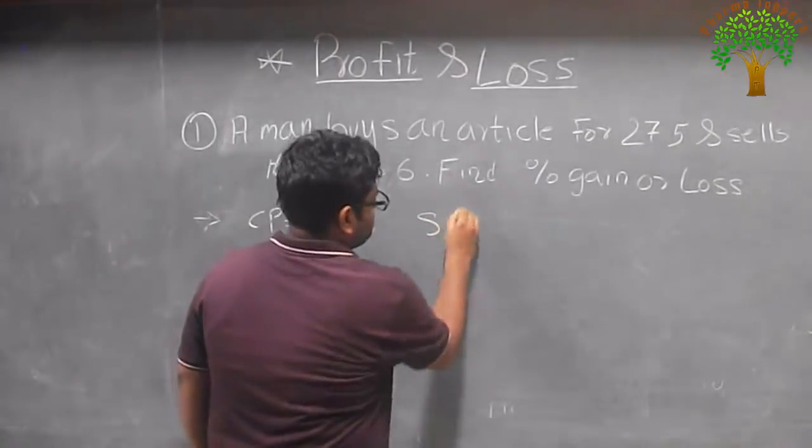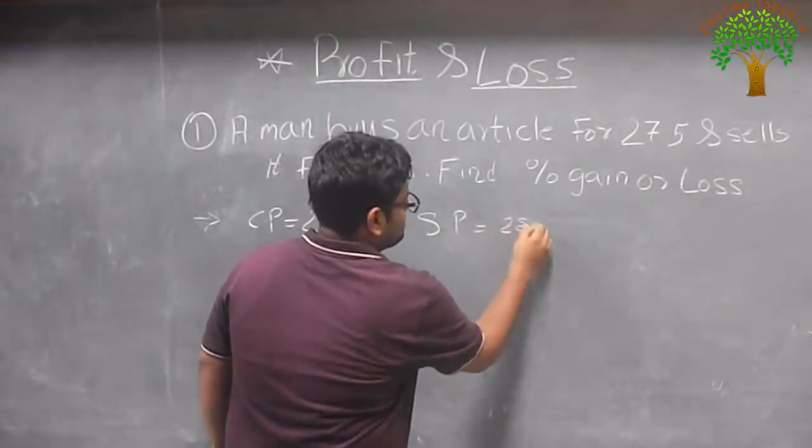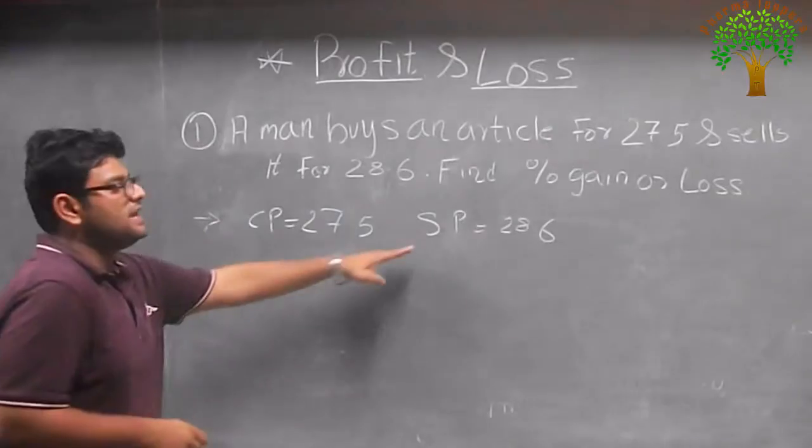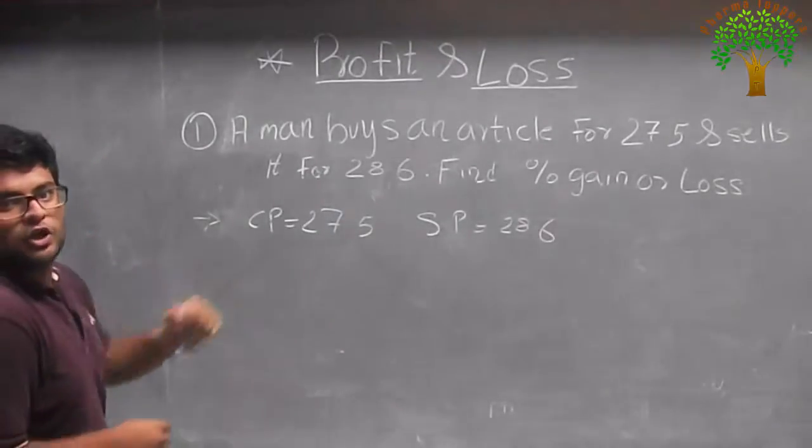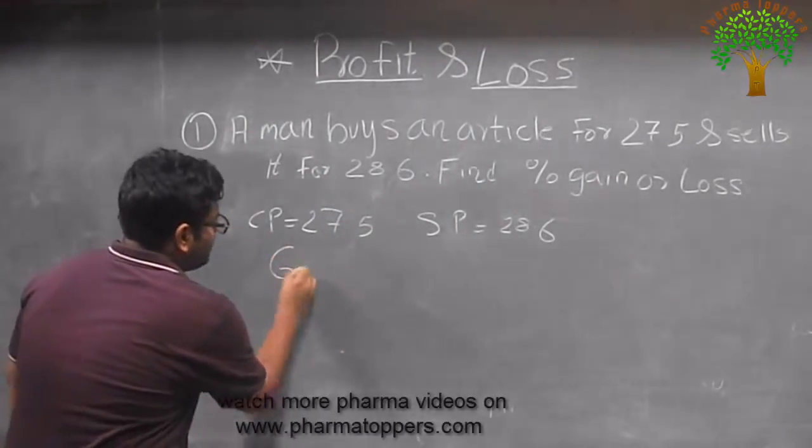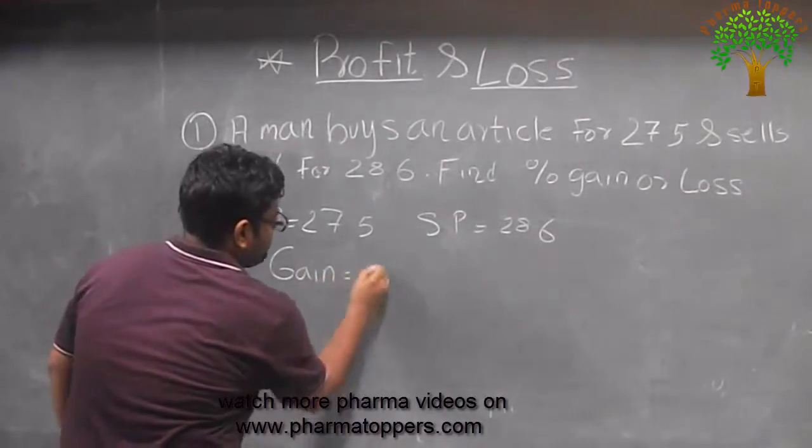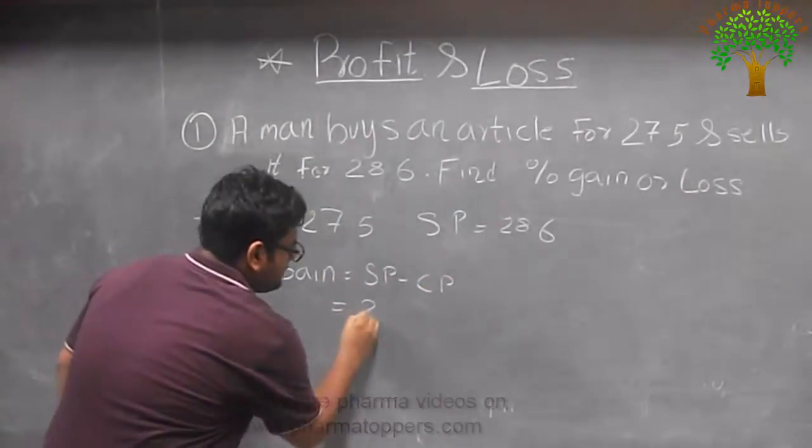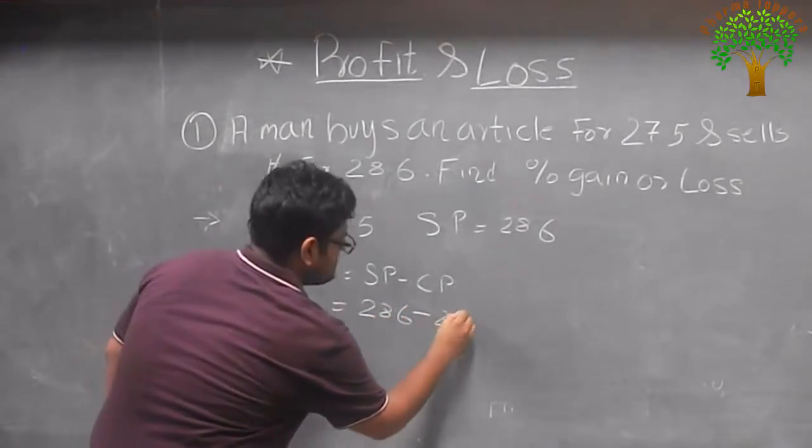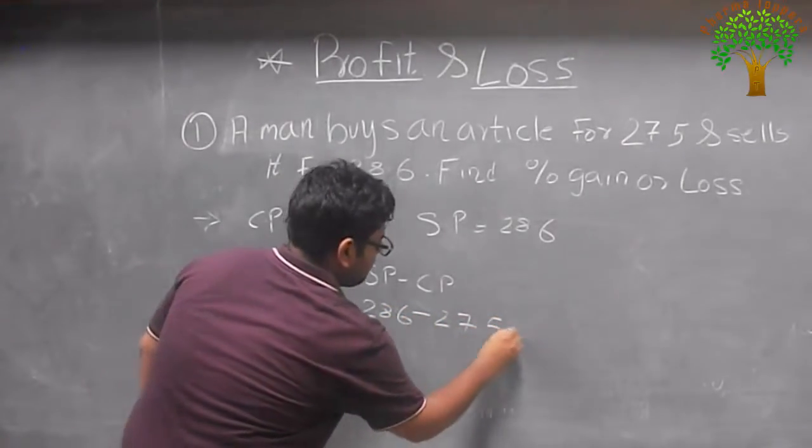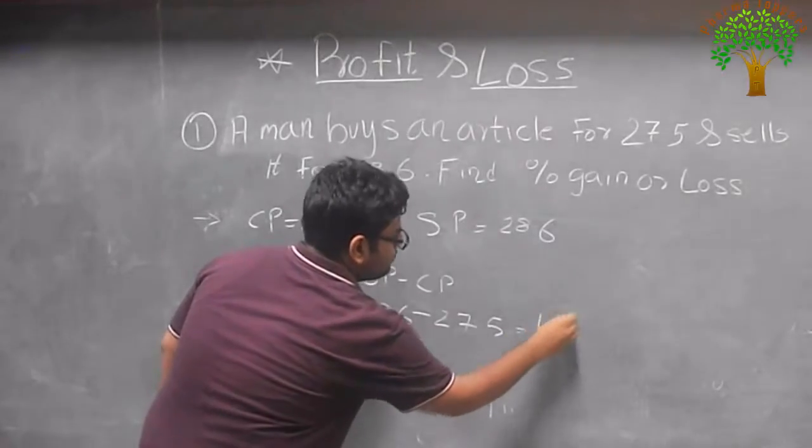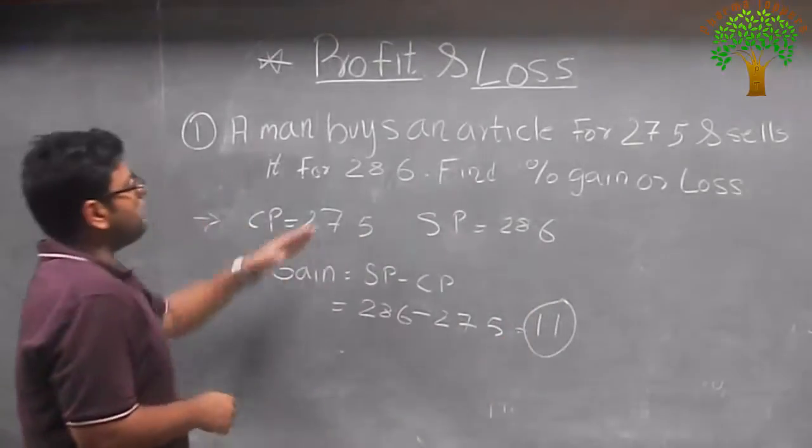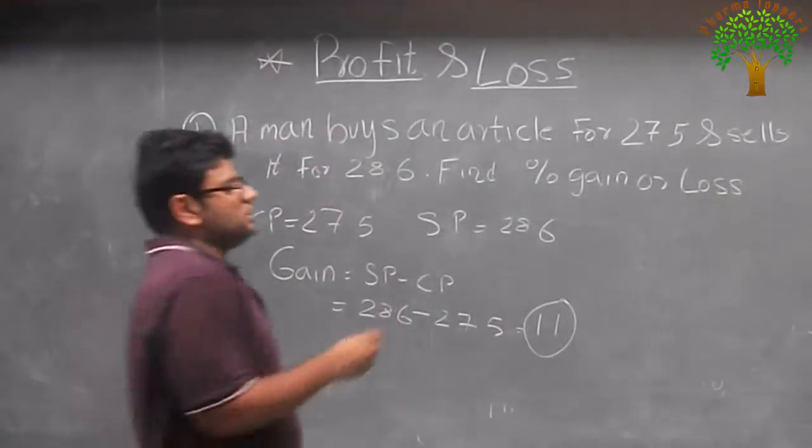Then we have a selling price of 28.6p. Naturally we see that the selling price is greater than the cost price so it is a gain. So let's calculate the gain. So the gain would be SP minus CP that is 28.6p minus 27.5p that accounts to 1.1p gain.